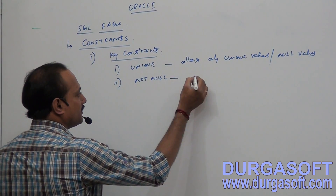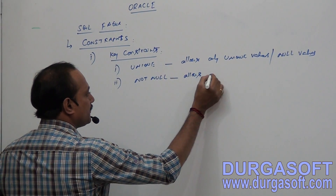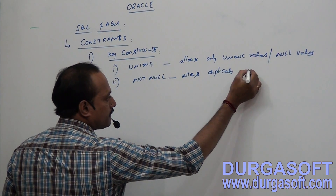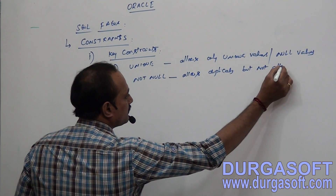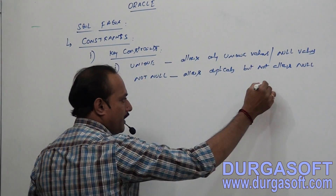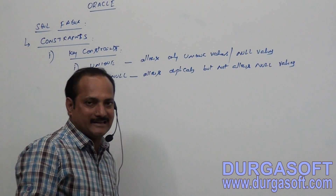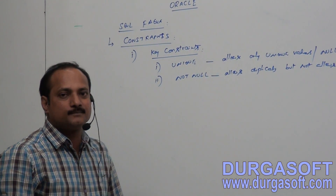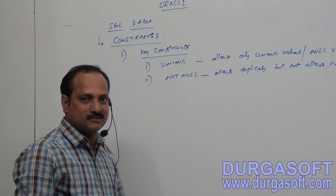What is not null? It allows duplicates but does not allow null values. Every value in this kind of column should be present. It is an important one — for all employee names, we must submit a value into the not null column.